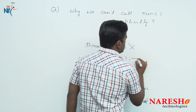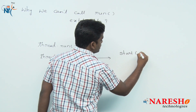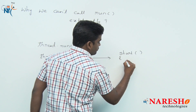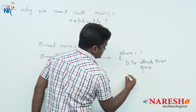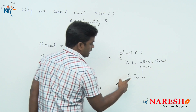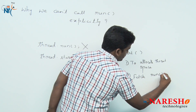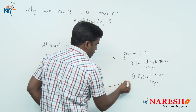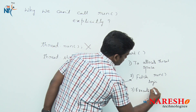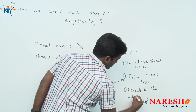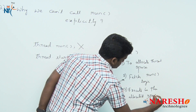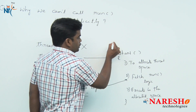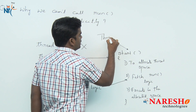Why? The start method is a predefined method. What does the start method do? The start method has predefined logic to allocate thread space. It then fetches the run method logic — whatever logic you have written in the run method — and executes it in the allocated space. The start method is predefined and available in the Thread class.